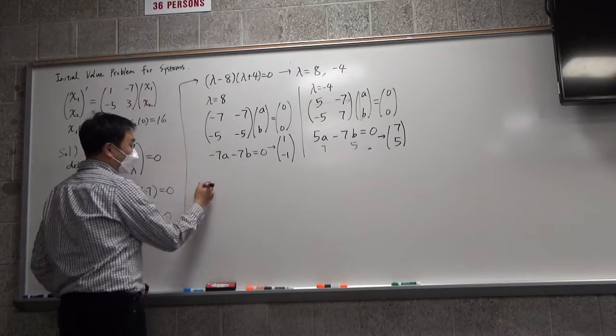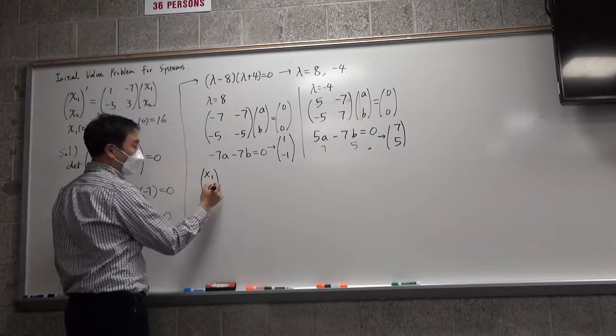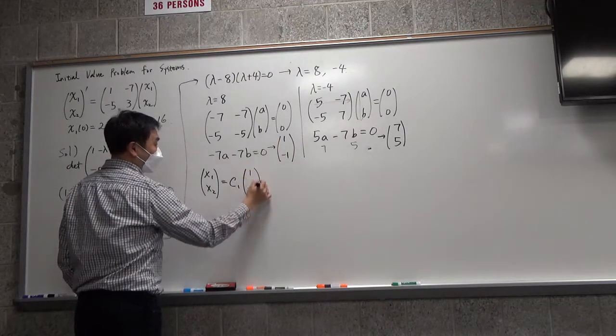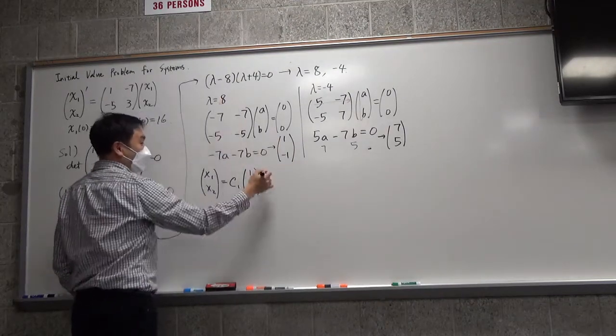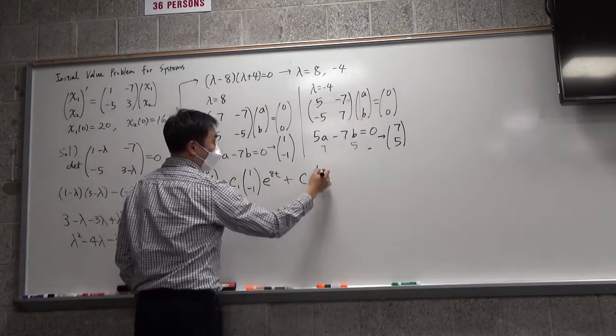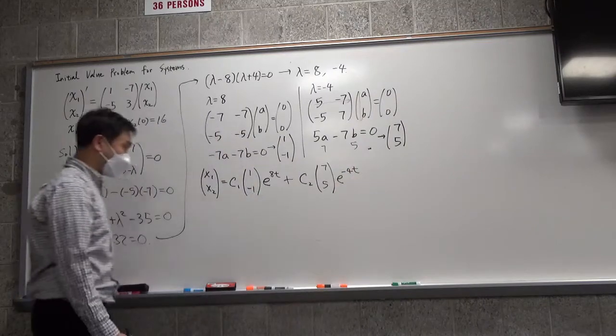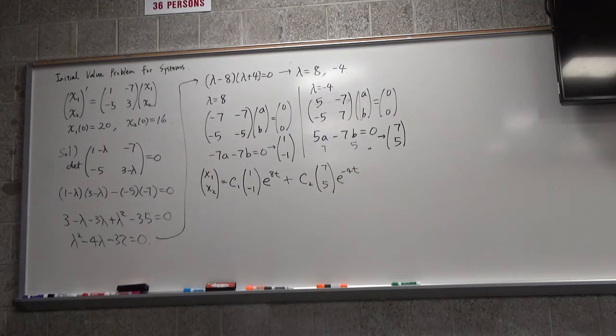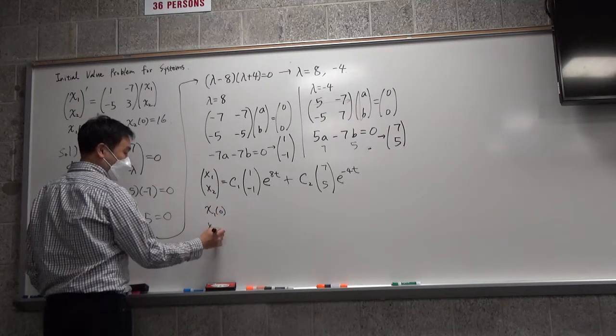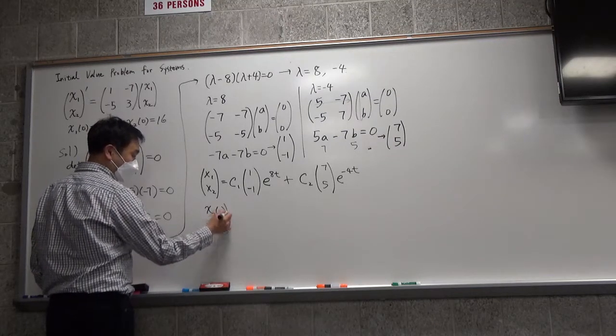Okay, so we're almost there. So here, now we have the general solution, which is X1, X2 is C1 times the eigenvector times E to the power of the eigenvalue times T, and C2, 7, 5, E to the negative 4T. And to this, we want to plug in X1, 0, X2, 0.